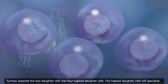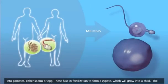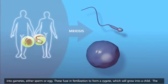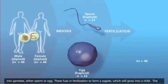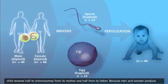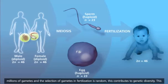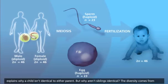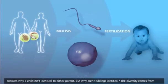The haploid daughter cells will specialize into gametes, either sperm or egg. These fuse in fertilization to form a zygote, which will grow into a child. The child receives half its chromosomes from its mother and half from its father. Because men and women produce millions of gametes, and the selection of gametes in fertilization is random, this contributes to genetic diversity and explains why a child isn't identical to either parent.